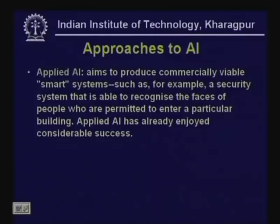The goal of applied AI is to produce commercially viable smart systems. For example, it would be nice to have a security system that recognizes faces of people who are permitted to enter a particular building. Applied AI aims to solve specific applications intelligently — not necessarily to construct a complete intelligent agent, but an agent that is intelligent in doing a specific task, such as recognizing people, detecting credit card fraud, or driving a vehicle autonomously.